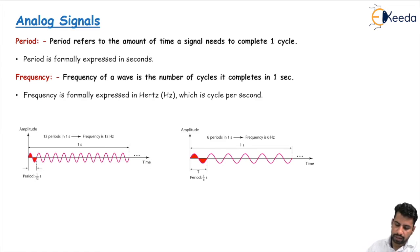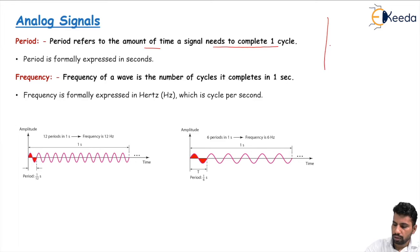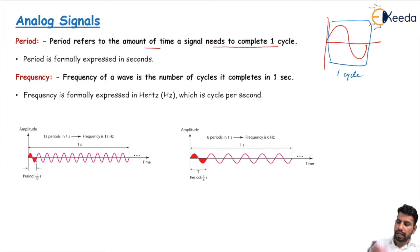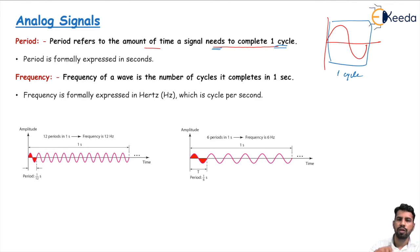Next is period. Period is the amount of time a signal needs to complete one cycle. Here is a sine wave, and this one cycle is shown. This particular wave is one cycle of a sine wave. How much time a signal takes to complete this one cycle is called the period of the signal.